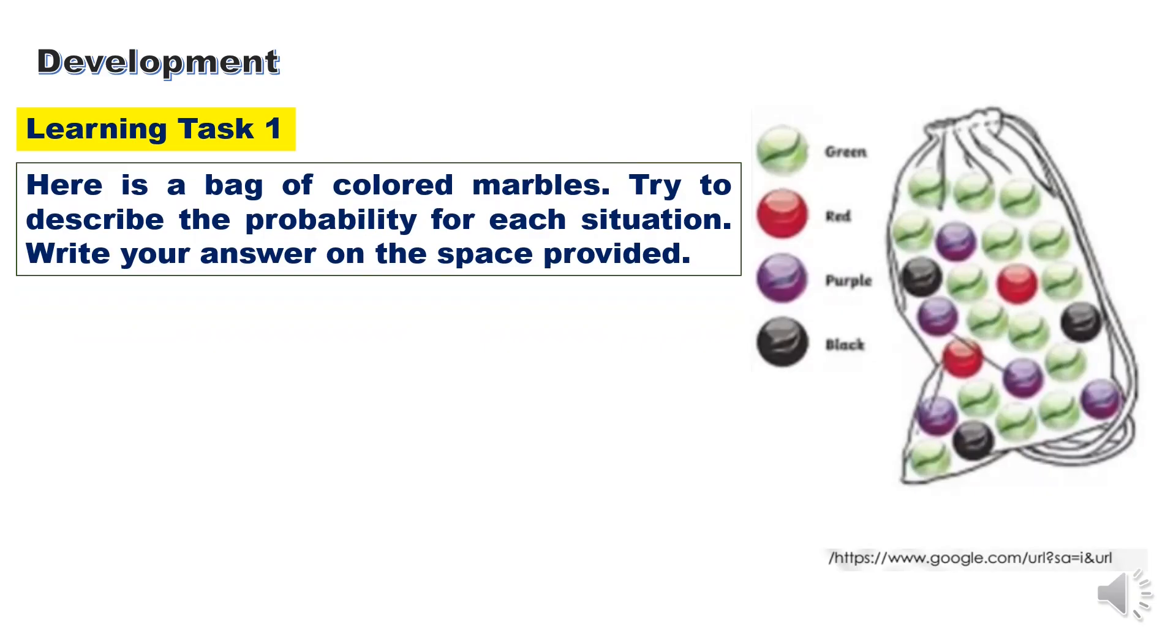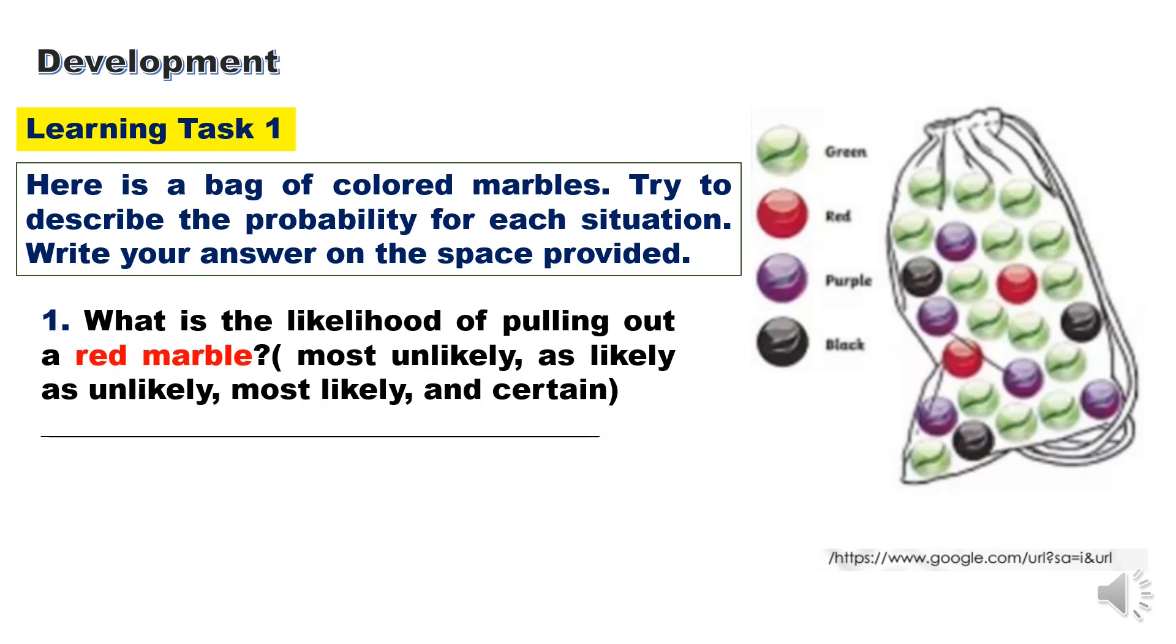Learning Task 1. Here is a bag of colored marbles. Try to describe the probability of each situation. Write your answer on the space provided. Number 1: What is the likelihood of pulling out a red marble? Most unlikely, as likely as unlikely, most likely, and certain. Since there are 2 red marbles out of 25 marbles, that is 8%, or most unlikely.